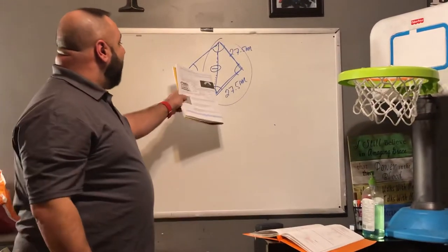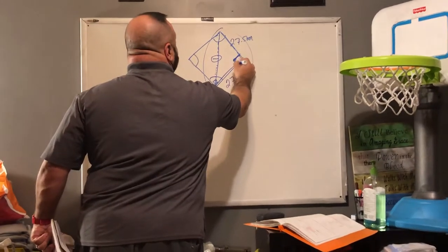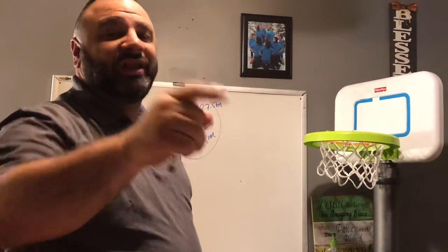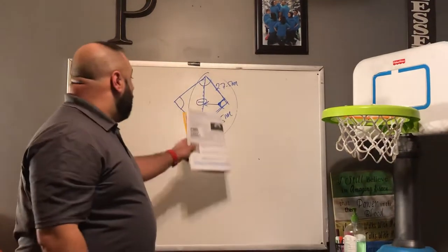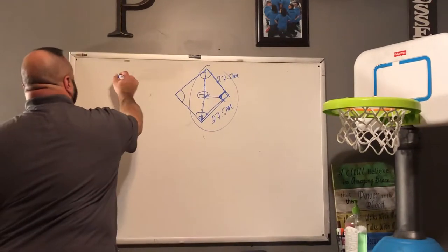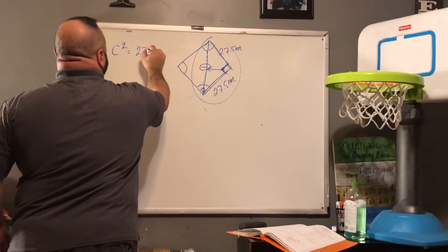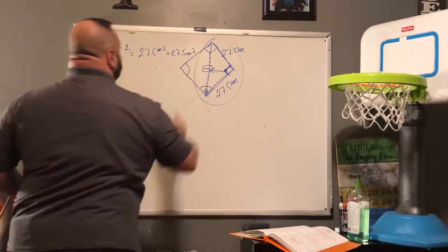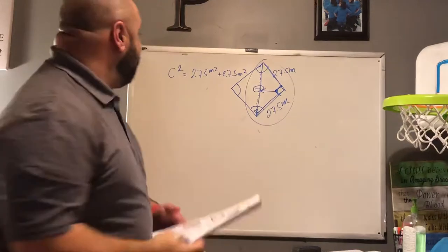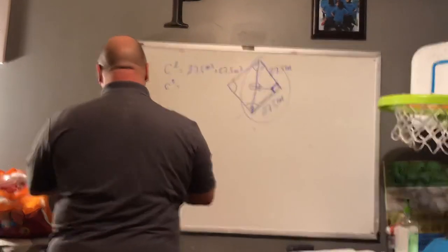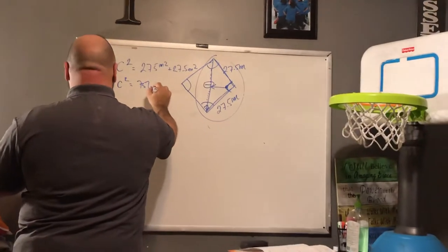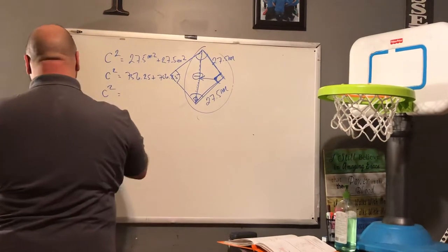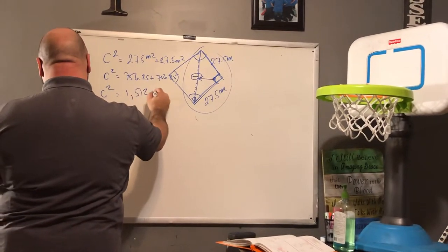We know both legs are 27.5 meters since all bases are equal distance apart. The line from home plate to second base is the hypotenuse — it's always opposite the right angle. So we plug in: C squared equals 27.5 squared plus 27.5 squared, which gives C squared equals 756.25 plus 756.25, so C squared equals 1512.5.